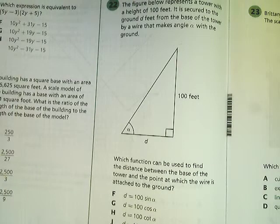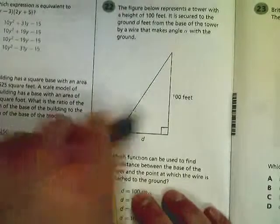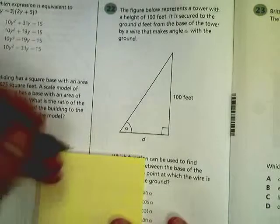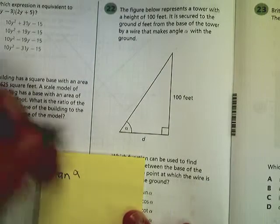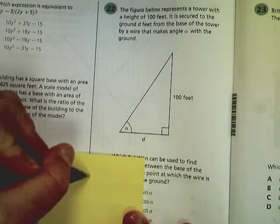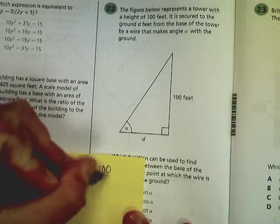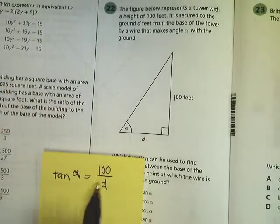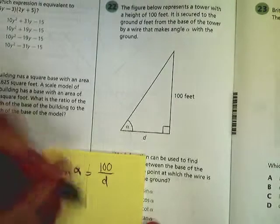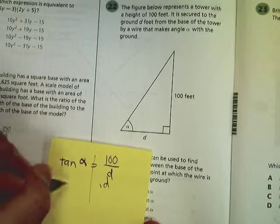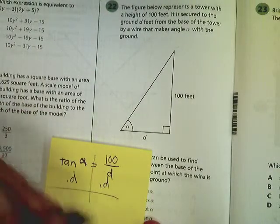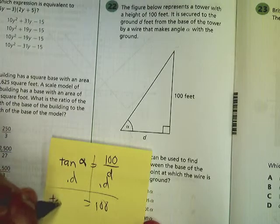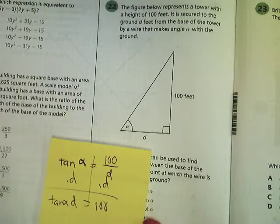So the first setup, I'd have opposite over adjacent, which is tangent. So in this case, tangent of the angle is equal to 100 over d. Now if I did this, I'd multiply both sides by d to get rid of that d in the denominator. And I'd end up with this.